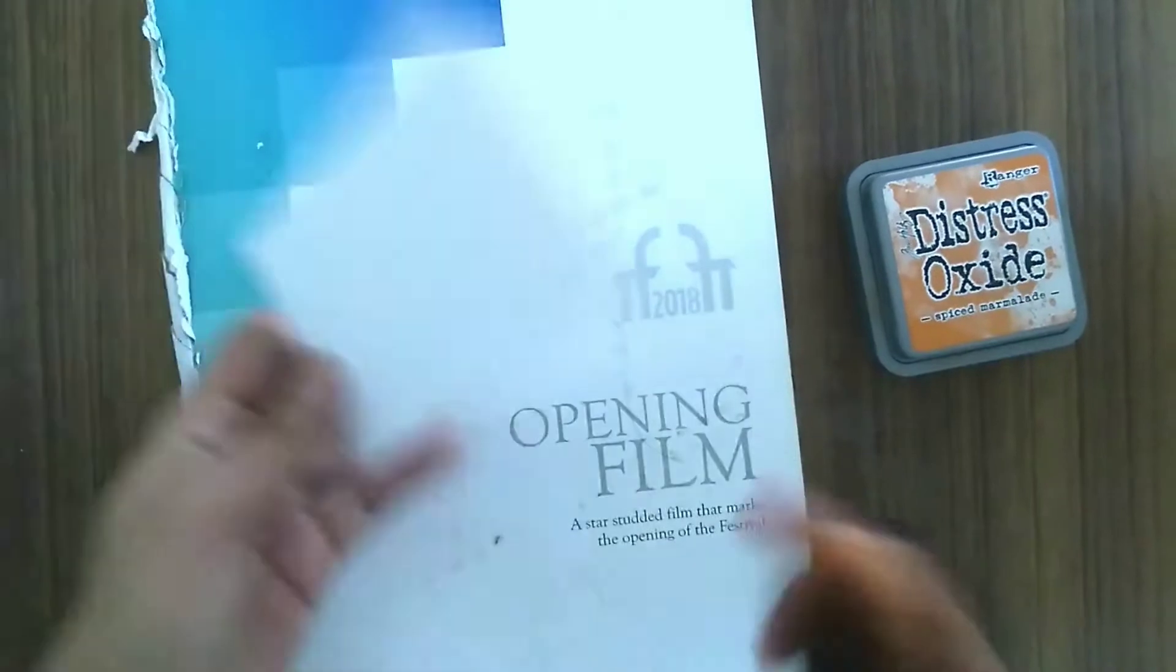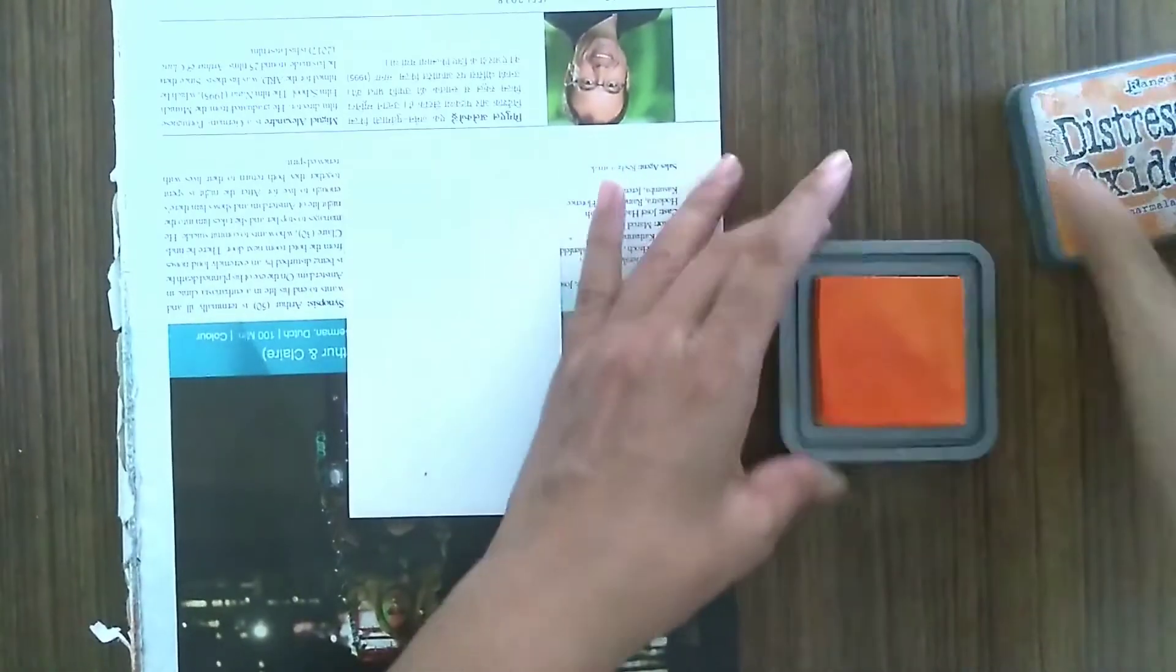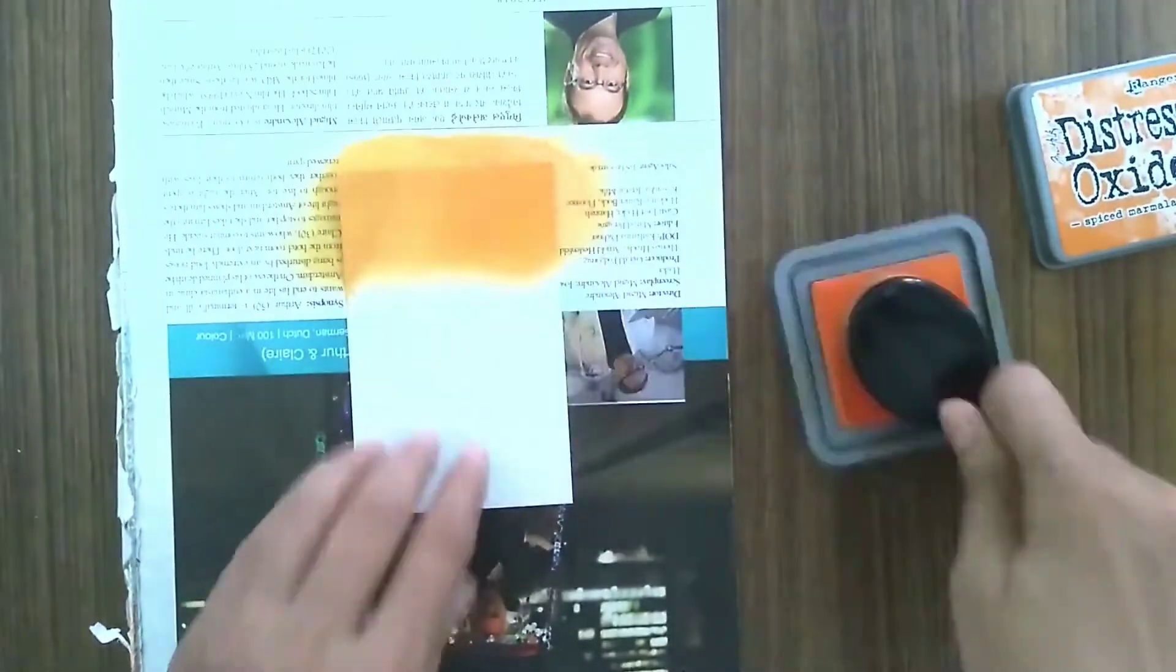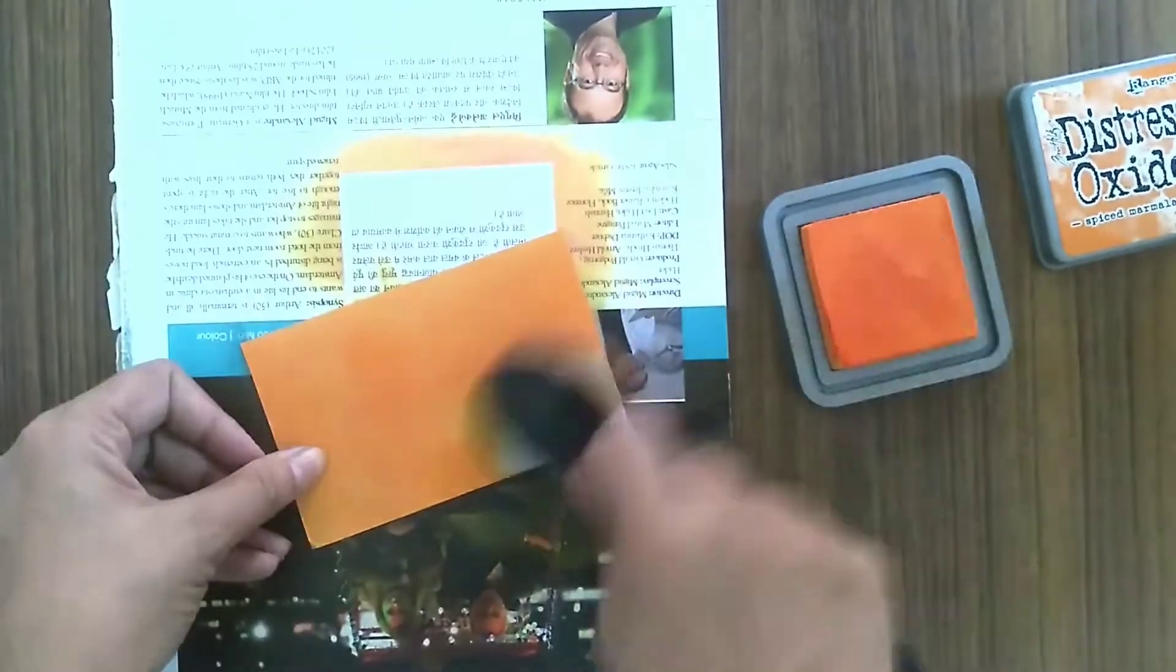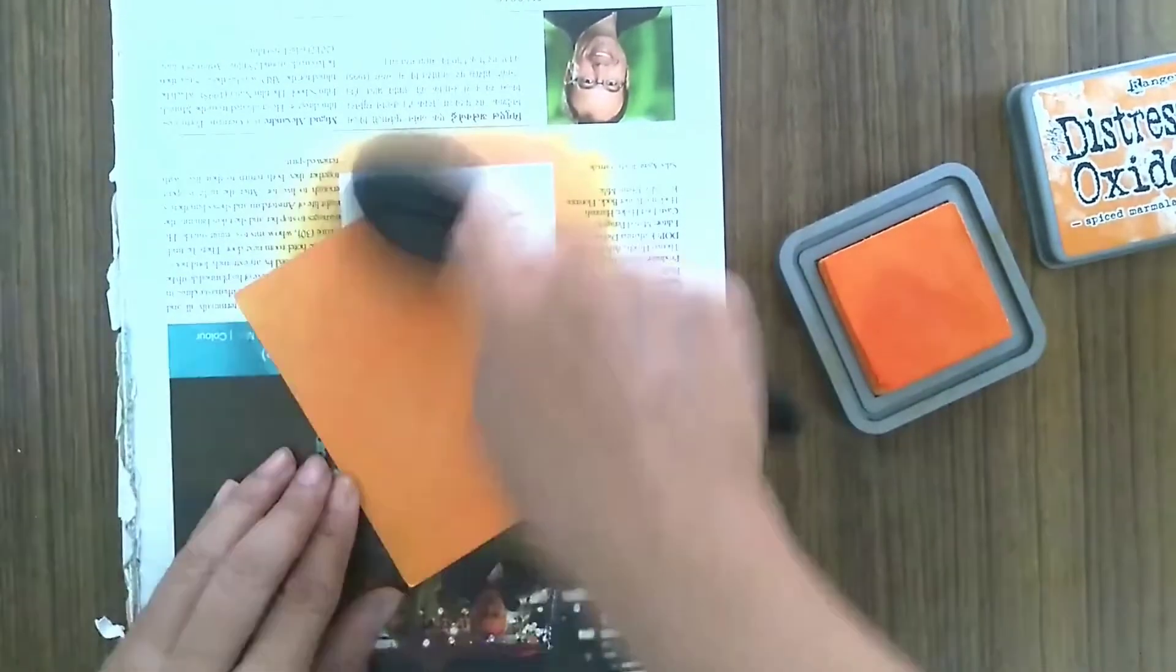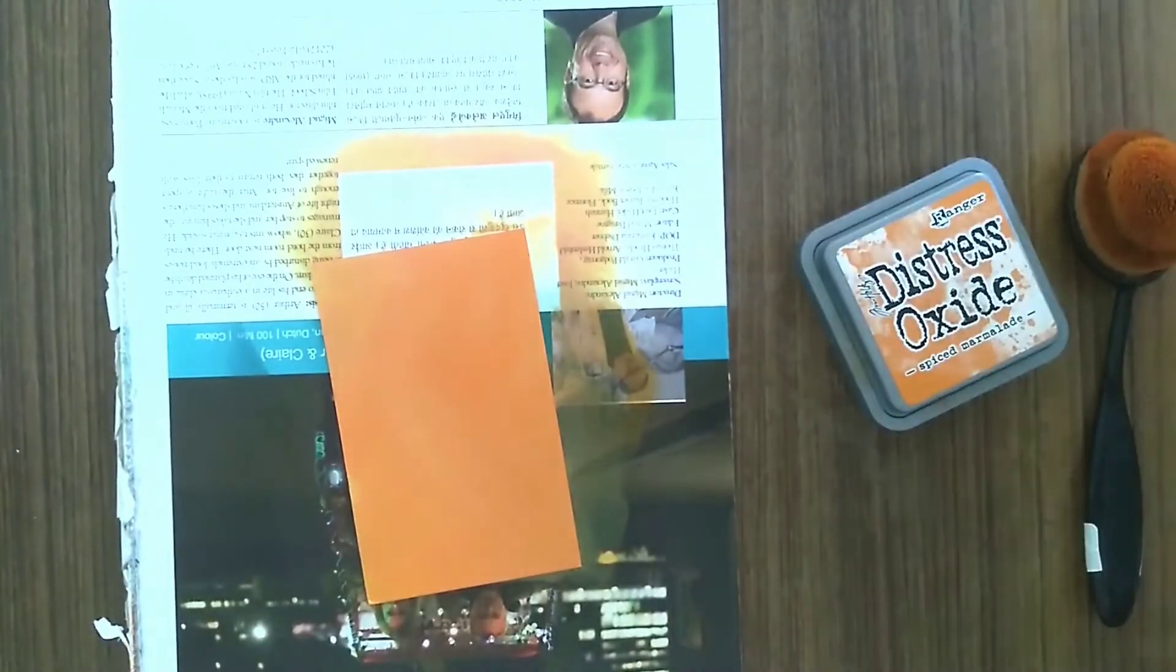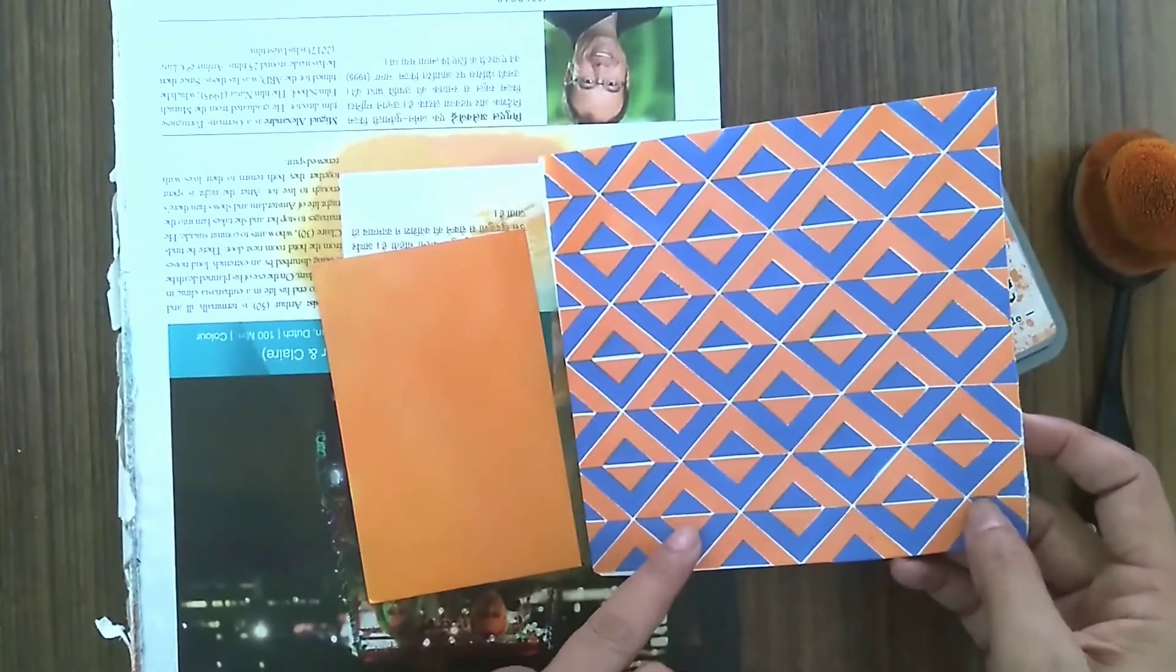Here I have the spiced marmalade distress oxide ink, a blending brush, and a small scrap of paper. Basically what I want to do is have a piece of paper which matches with my background exactly, and I'm going to do that by just applying some distress oxide ink on this piece of paper. This is the easiest way to get an exact matching scrap of paper for your die cutting. There, that is the background we created. You'll see that the color of the paper is matching it almost exactly.